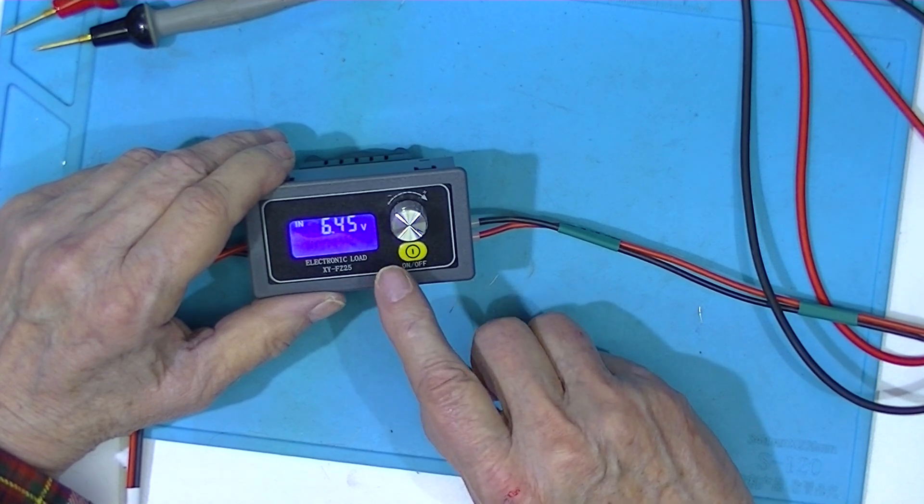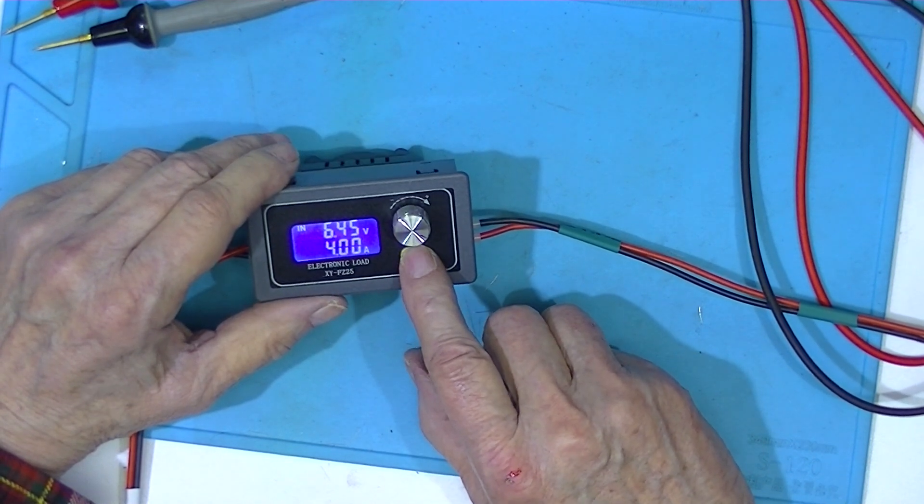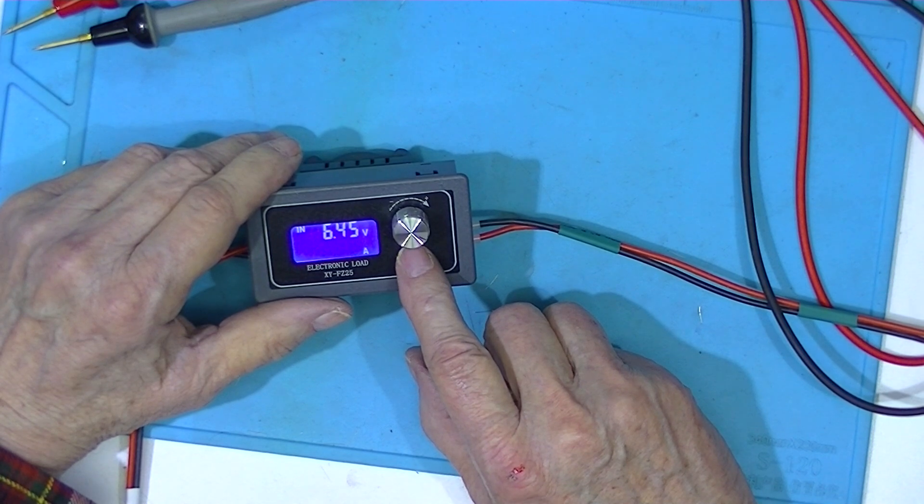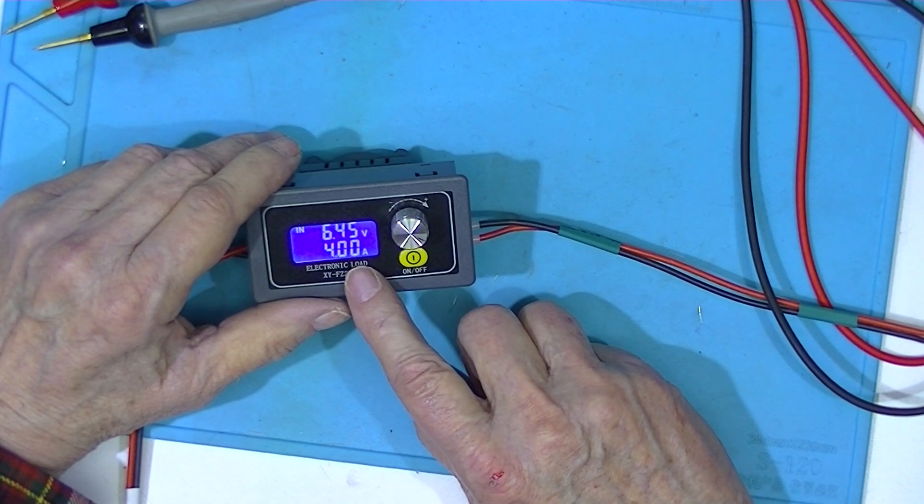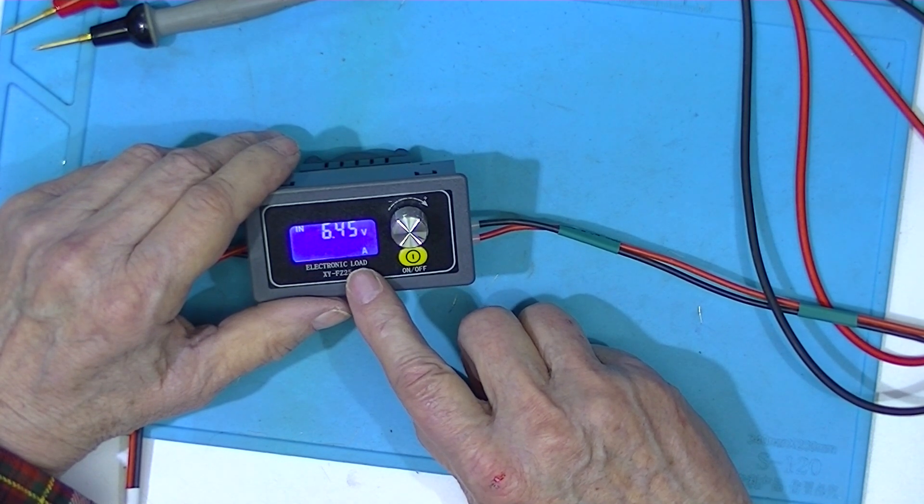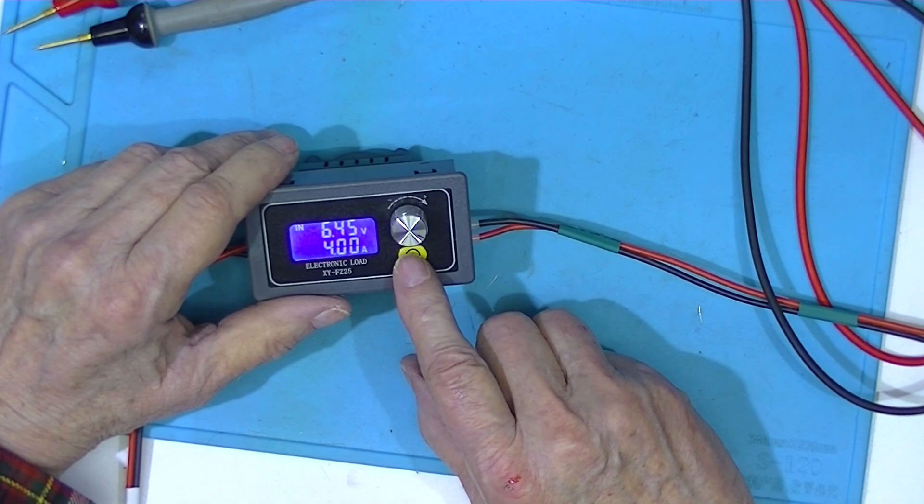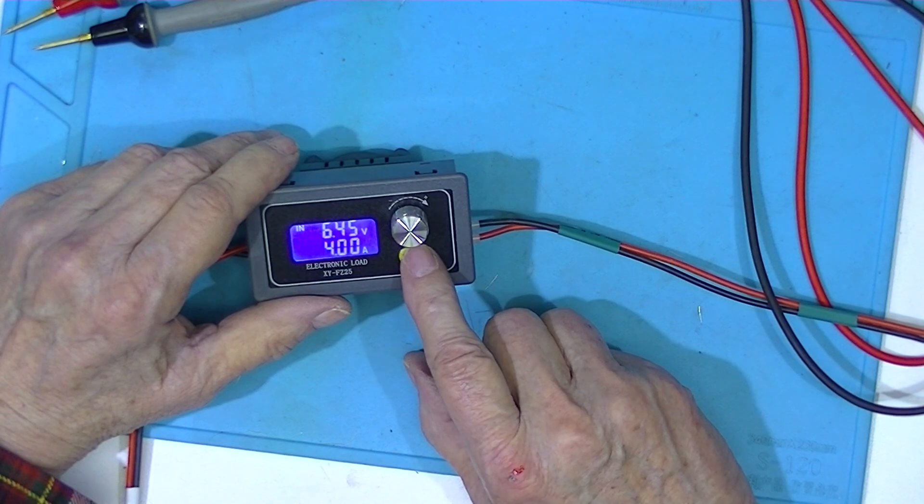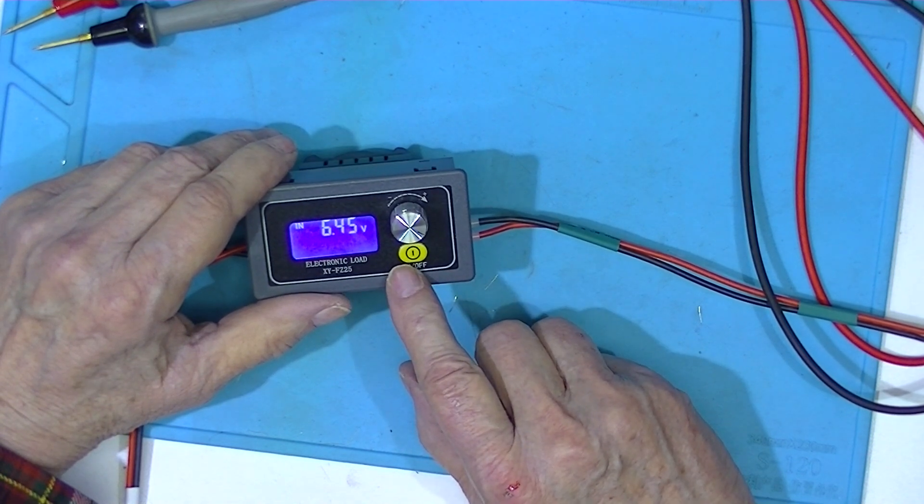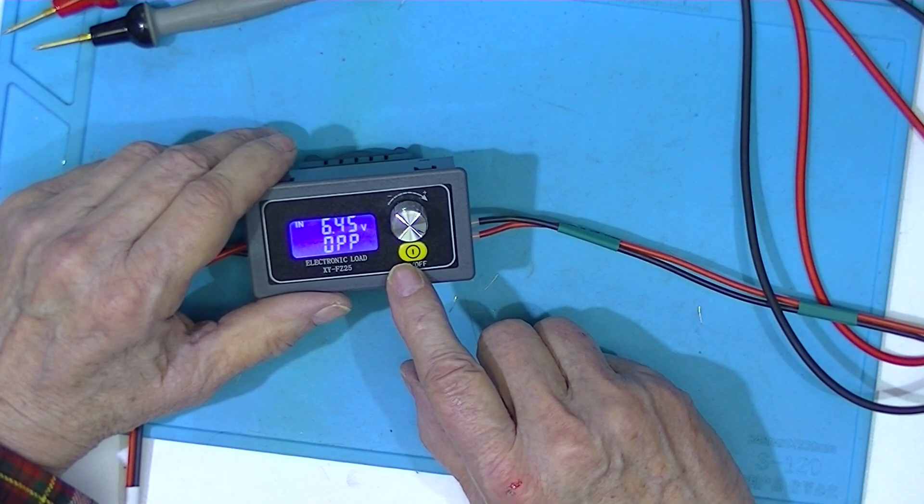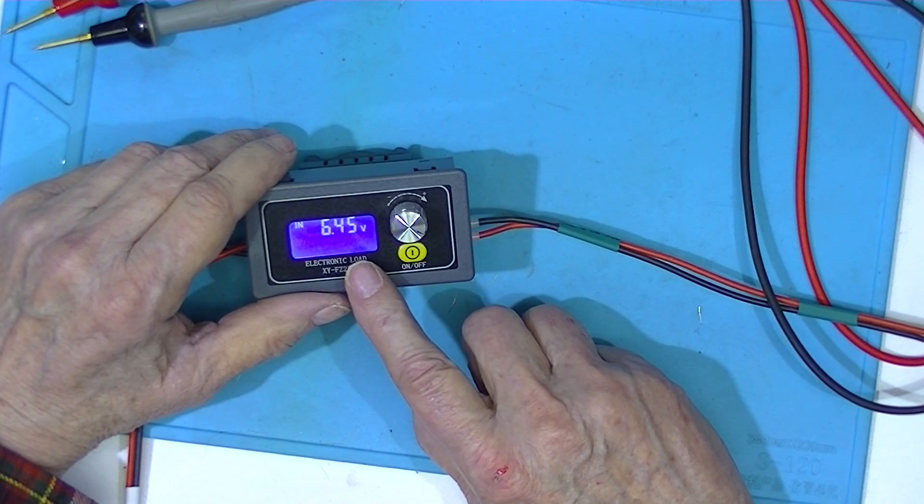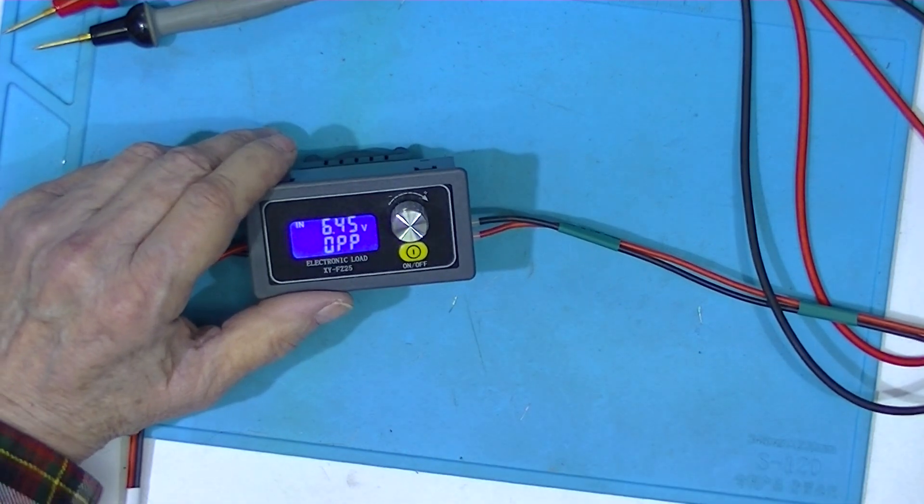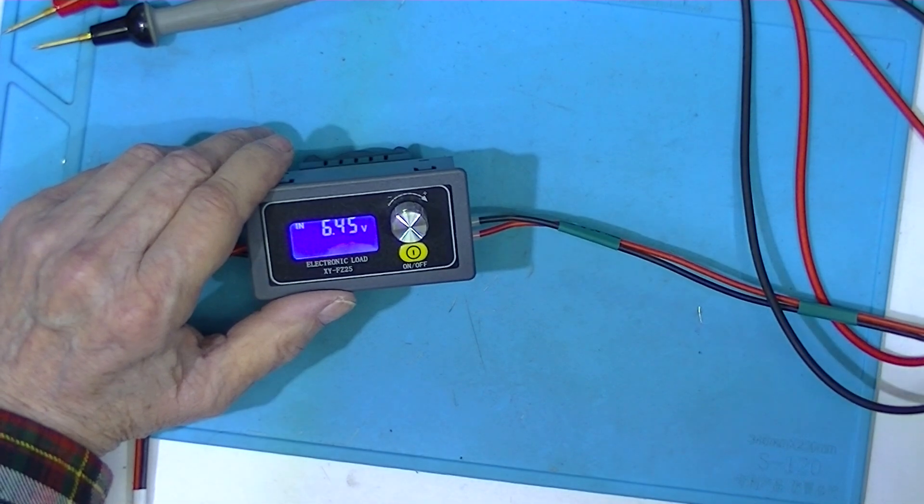It's shutting down on overpower. That apparently is the amp setting because it's not drawing any current right now. I guess it's flashing if I try to turn it on. Goes into overpower protection. Turn the voltage down to say six.